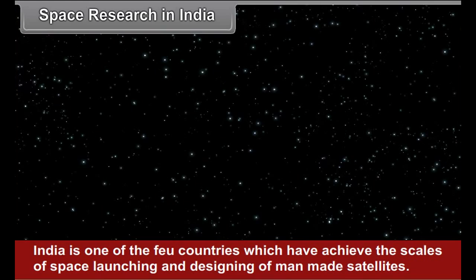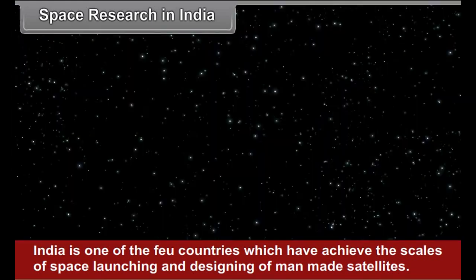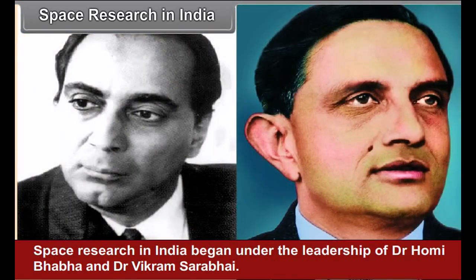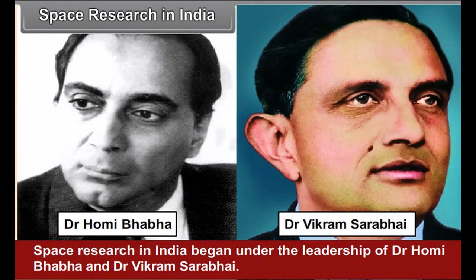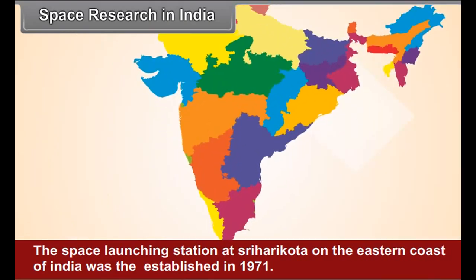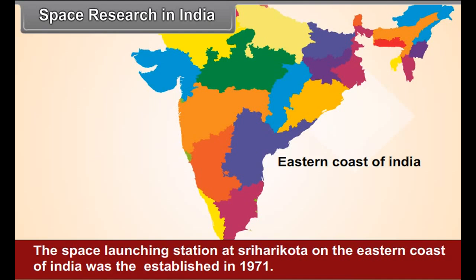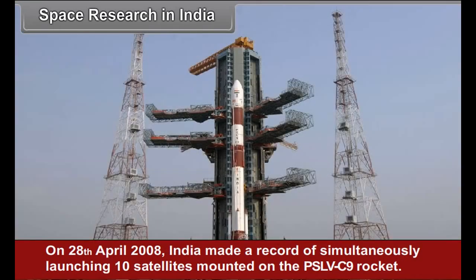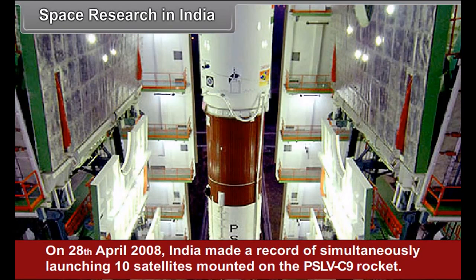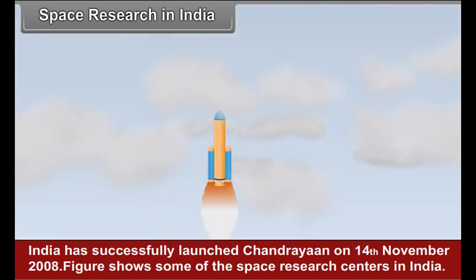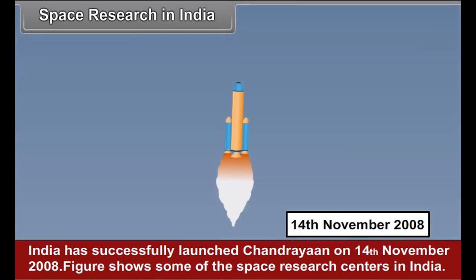Space Research in India: India is one of the few countries which have achieved the skills of space launching and designing of man-made satellites. Space research in India began under the leadership of Dr. Homi Bhabha and Dr. Vikram Sarabhai. The first rocket was launched from Thumba in 1969, and the space launching station at Sriharikota on the eastern coast of India was established in 1971. On 28th April 2008, India made a record of simultaneously launching 10 satellites mounted on the PSLV-C9 rocket. India also successfully launched Chandrayaan on 14th November 2008. Figure 1.2 shows some of the space research centers in India.